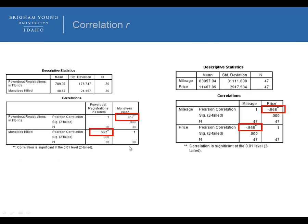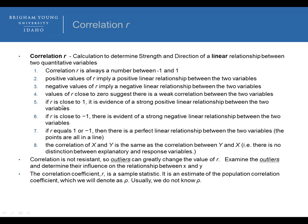Here are a couple of examples of correlation using output from SPSS. If we look at the correlation between the number of manatee killed and the powerboat registration, we see that the correlation, or R, is 0.952. Based off of that, we see that it's a strong relationship because R close to 1 means strong. Not only strong, but since it's positive and close to 1, it's a strong positive linear relationship.